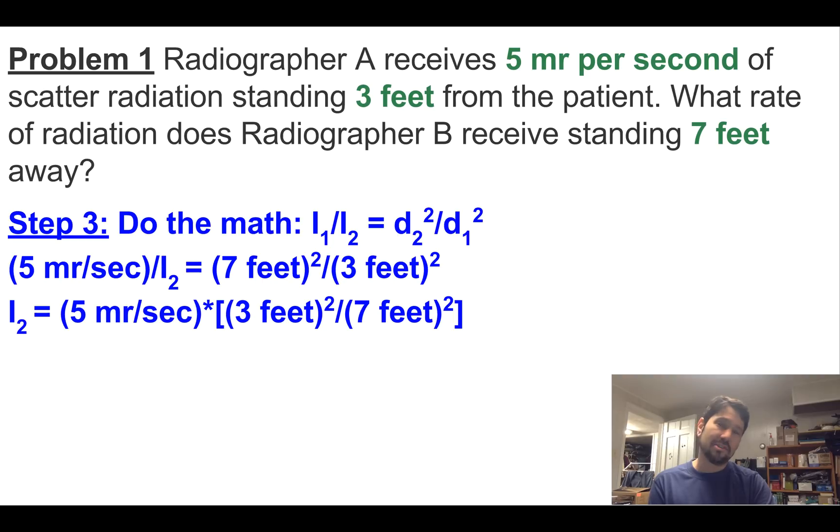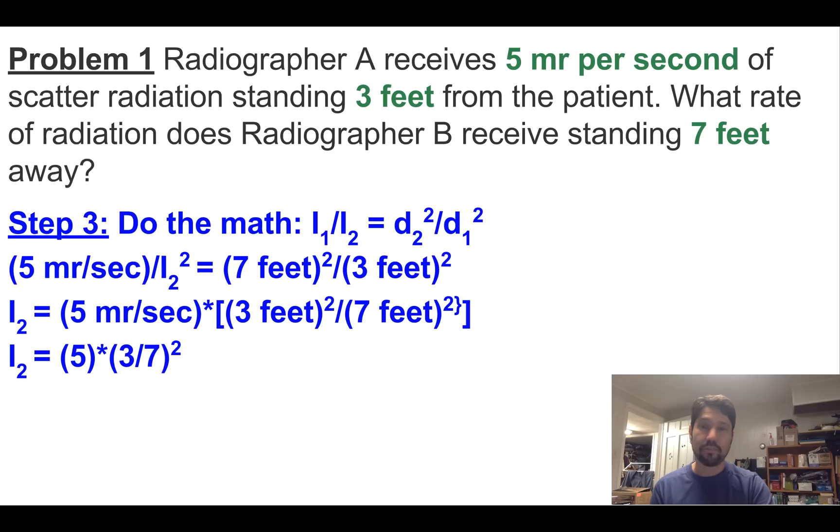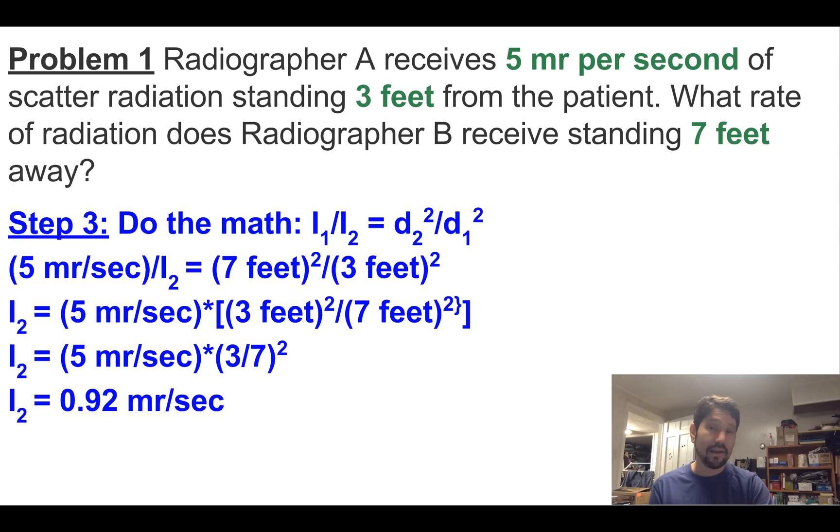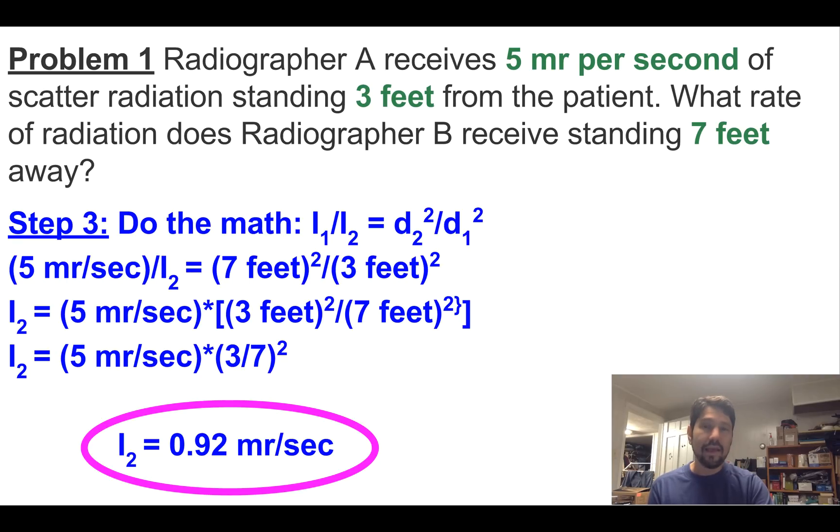We flip that I2 to one side. We flip that ratio of distances to the other side. And using our incredible algebraic skills, we've got five millirads per second times three feet squared over seven feet squared will equal our intensity two. Five times three sevenths squared equals 0.92 millirads per second. And let's make it really obvious for our teacher to find.